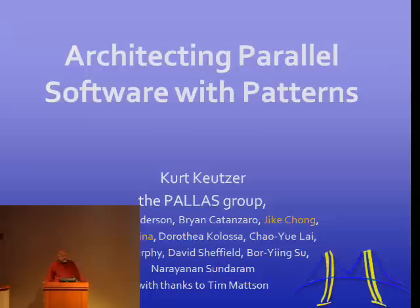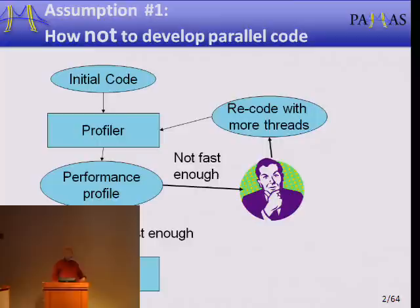I'd like to start by talking about ways not to develop parallel code. This is the approach where you take your legacy sequential code, you profile it, you find some hot spots, you take that performance profile, you recode that portion with threads, get your thread building blocks manual out, profile again, and keep going through this until you think it's fast enough.